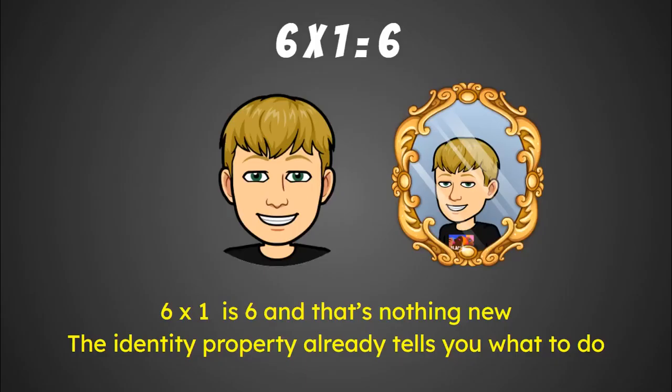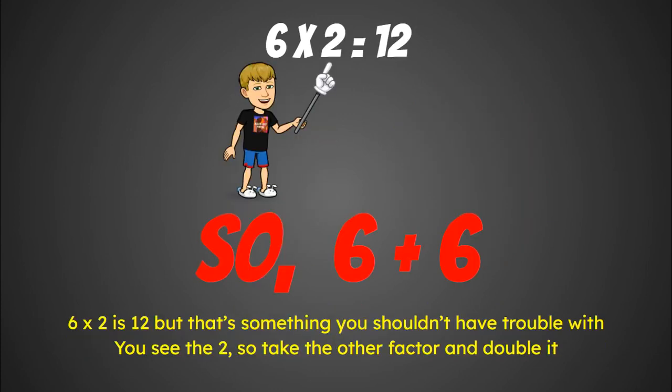Six times one is six and that's nothing new. The identity property already tells you what to do. Six times two is twelve, but that's something you shouldn't have trouble with. You see the two, so take the other factor and double it.